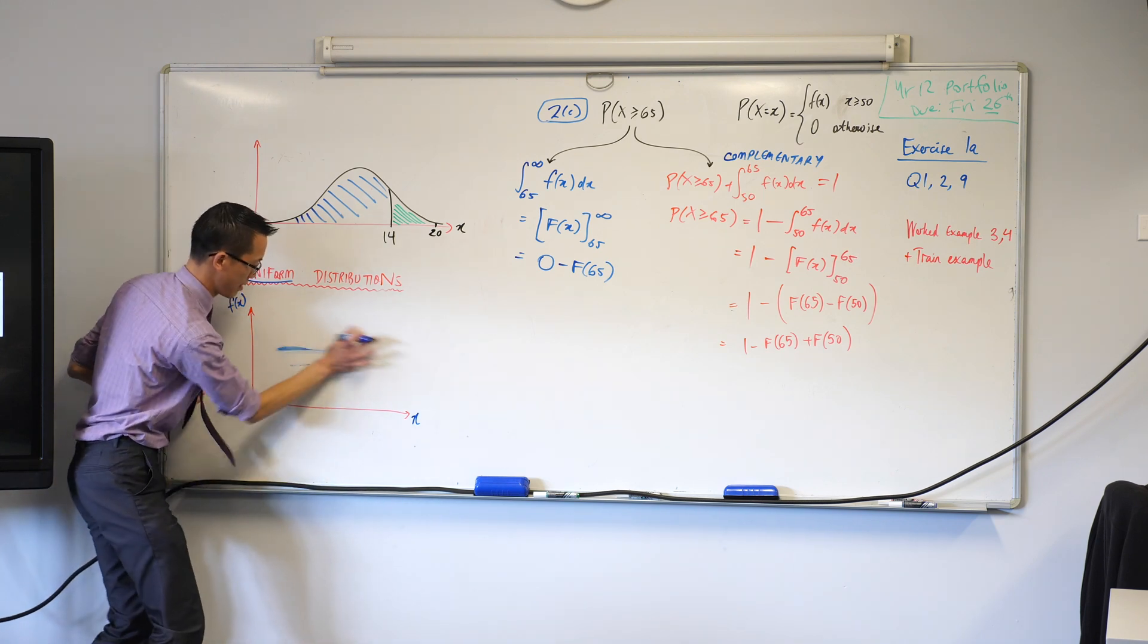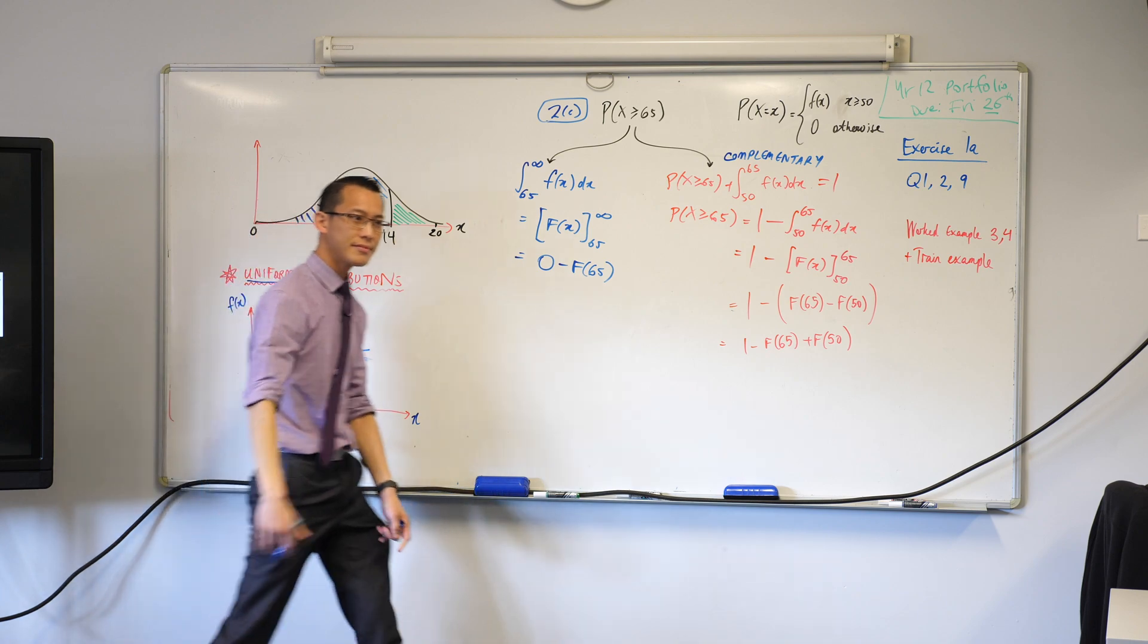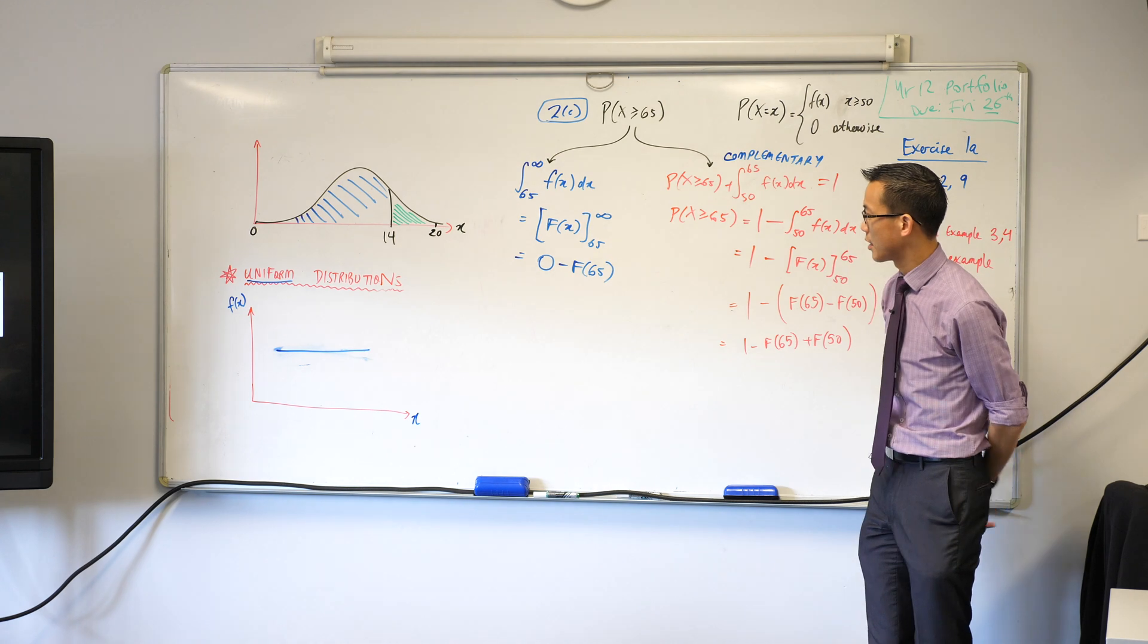Have I drawn that parallel? Parallel-ish, I can do better than that. I've got to look at it a little more. There we go. So you just have this very simple shape, because the probability all the way along is the same value.